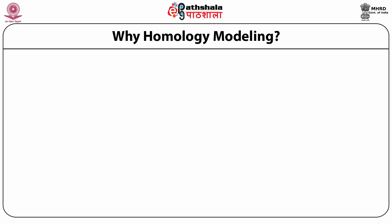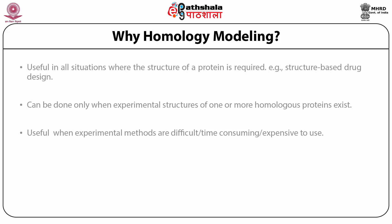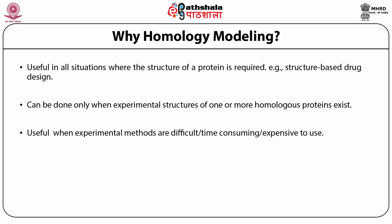Now why should we do that? It is useful in all such situations where the structure of a protein is required — for example, for drug discovery, structure-based drug discovery. You need the structure of a receptor. In your particular case you might not have the receptor structure at hand, but if you have the structure of a related receptor, you can take your sequence and the structure of the related receptor and hopefully predict the structure good enough for your purpose.